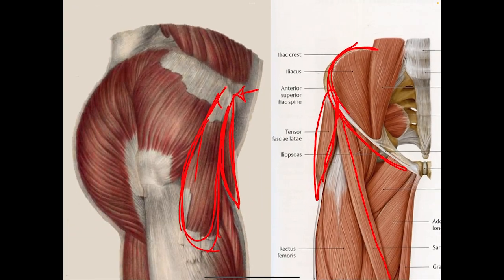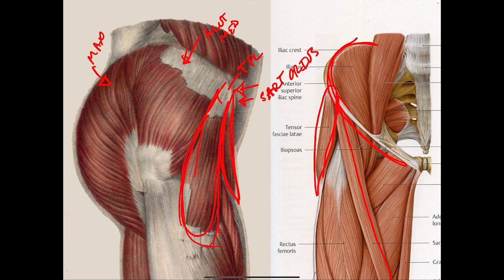So I'm going to repeat this one more time: sartorius, TFL, gluteus medius, gluteus maximus. Sartorius is S-A-R-T-O-R-I-U-S. TFL is tensor fasciae latae, gluteus medius, gluteus maximus.